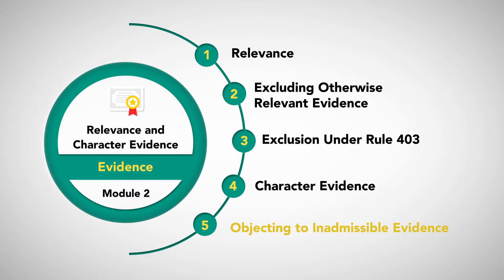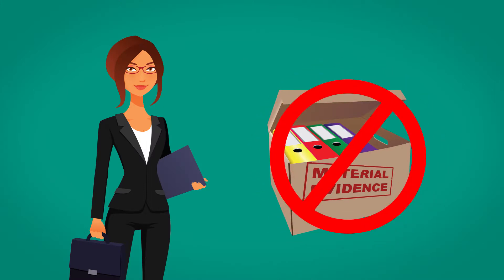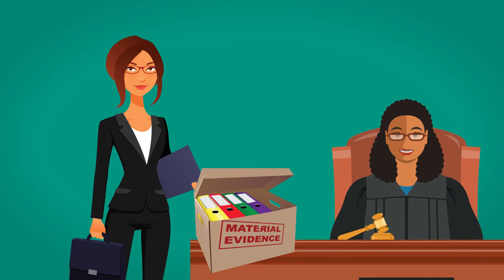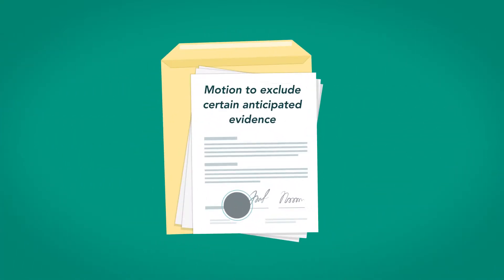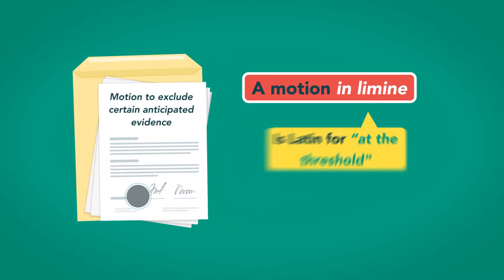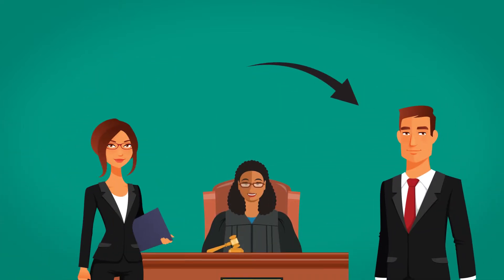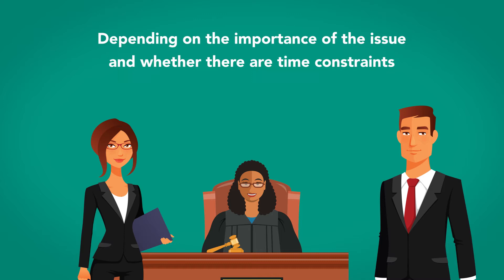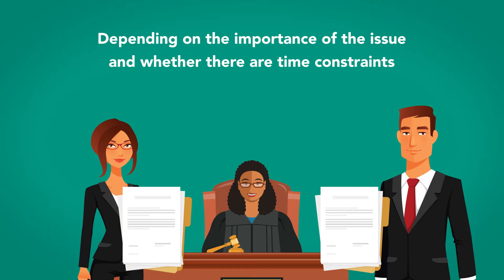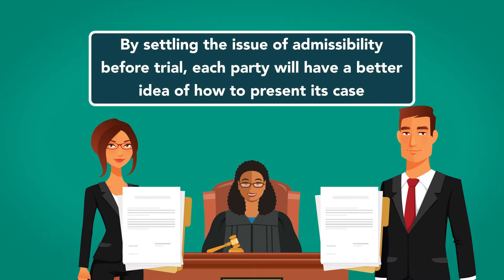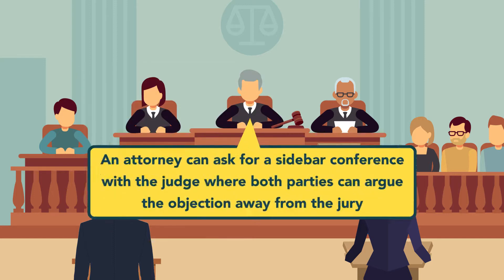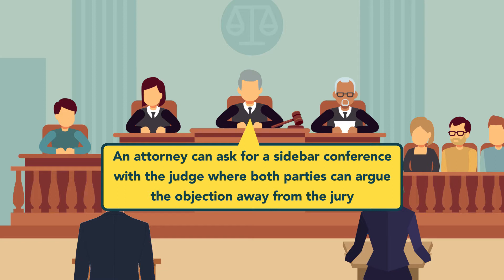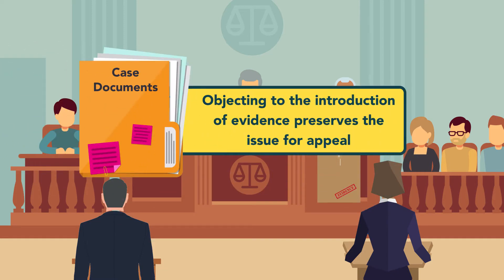Objecting to Inadmissible Evidence. An attorney who seeks to exclude otherwise relevant evidence may do so in either of two ways. If the attorney knows that the evidence is going to be introduced before the trial, she can ask the judge to anticipatorily rule that the evidence is inadmissible. A motion before the trial to exclude certain anticipated evidence from being introduced is sometimes called a motion in limine, which is Latin for 'at the threshold.' The other party will be given an opportunity to defend its admissibility, and each side may submit written arguments and/or engage in oral arguments on the issue. By settling the issue of admissibility before trial, each party will have a better idea of how to present its case. If objectionable evidence is introduced at trial, the opposing attorney can object at that time and ask for a sidebar conference with the judge. Even if unsuccessful, objecting to the introduction of evidence preserves the issue for appeal.